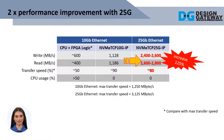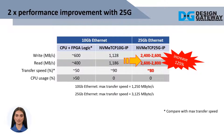25G Ethernet is now the most cost-performance effective solution for single-channel Ethernet interface, and is suitable for 100G Ethernet connection by implementing four NVMe TCP 25G IP Cores to work as a 4-channel RAID controller.